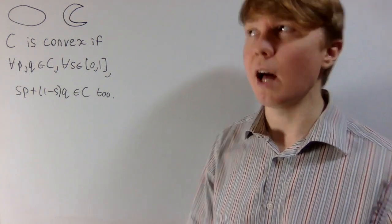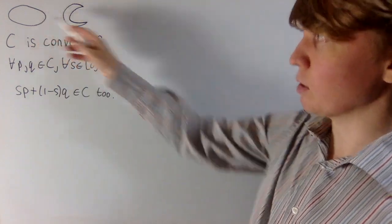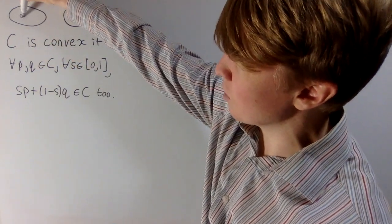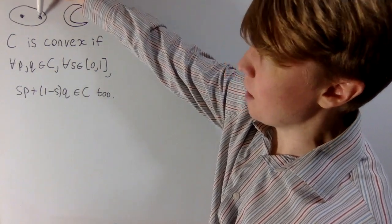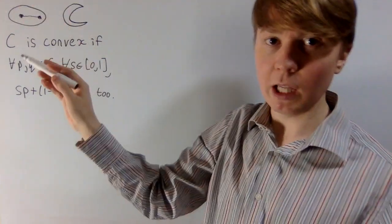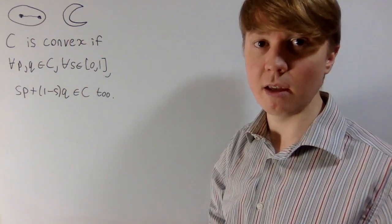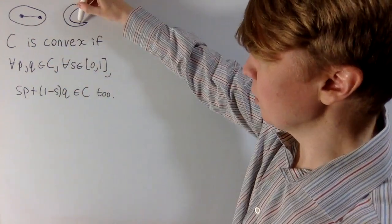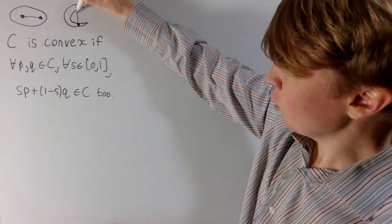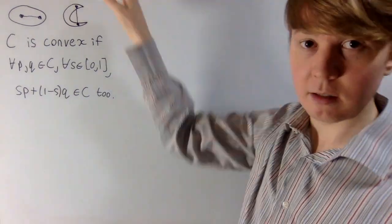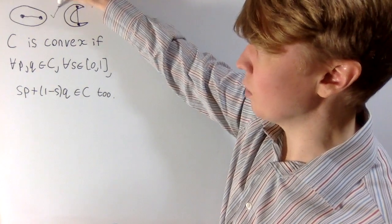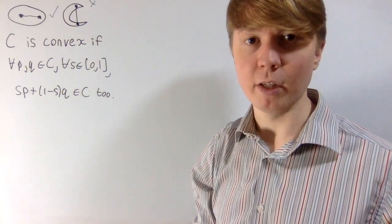What is a convex set? You can think of this pictorially: basically, if you're in 2D Euclidean space, you've got a convex set if for any two points in your space, you can draw a line between them and that line is contained within the set too. For example, for this crescent moon shape, you can see this line isn't contained within the set, so this one isn't convex, whereas your blob shape is convex.